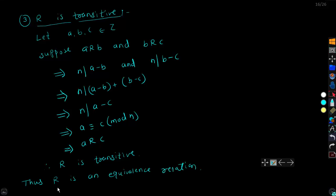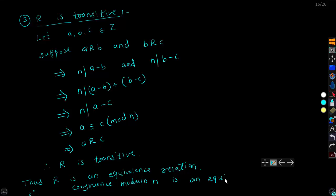This R is nothing but congruence modulo n. Therefore congruence modulo n is an equivalence relation. Thank you, students.